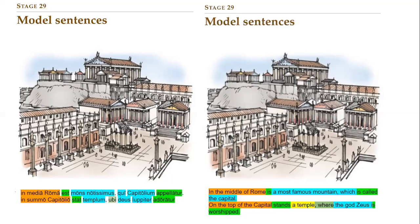'In summo Capitolio' — same construction — on the summit, the Capitoline summit, or on the top of the Capitoline, 'stat templum': stands the temple. That's an active verb right there. Then 'ubi deus Iuppiter adoratur' — another passive verb inside an ubi clause — where the god Jupiter is worshipped. The god Jupiter is worshipped.